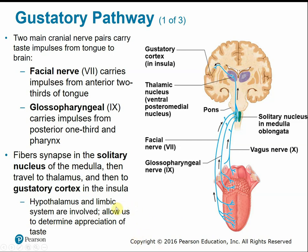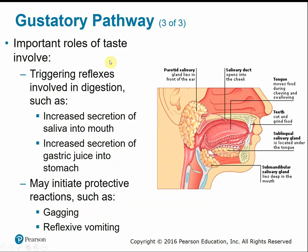The hypothalamus and limbic system are also involved in taste, giving us an emotional connection to flavors. Taste triggers reflexes involved in digestion — when the tongue tastes food, the brain stimulates secretion of saliva from the salivary glands and gastric juice from the stomach in anticipation of the meal. Taste also provides protective reactions: if something is poisonous or spoiled, we have a reflexive gagging and vomiting response.